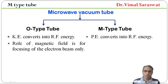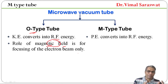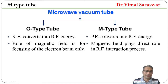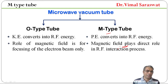In O-Type tube, the role of magnetic field is for focusing of the electron beam only. O-Type tube में, जो magnetic field का role है, वो केवल electron beam को focus करने में होता है. And the role of magnetic field in M-Type tube is a direct role in the radio frequency interaction process. M-Type tube में magnetic field, radio frequency interaction process में directly involve होती है.